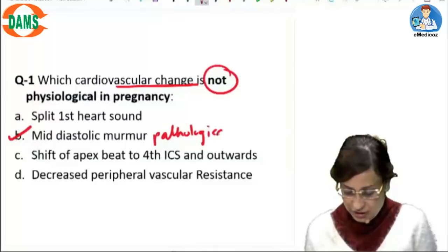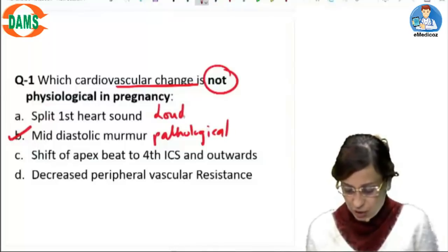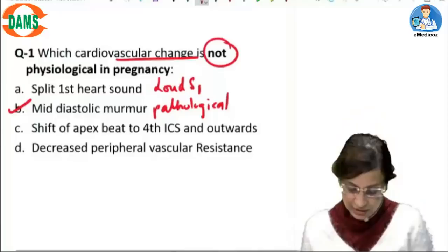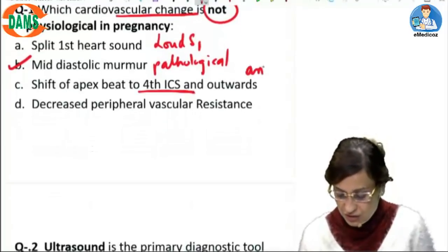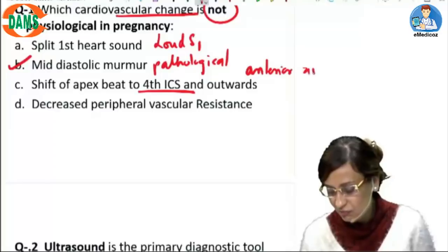First heart sound can be split as well as loud. It is all physiological. Shift of apex beat to the fourth intercostal space. This is because of the anterior and upward rotation of the heart.